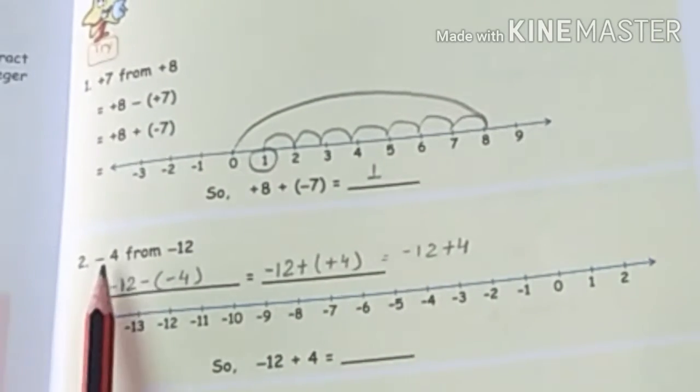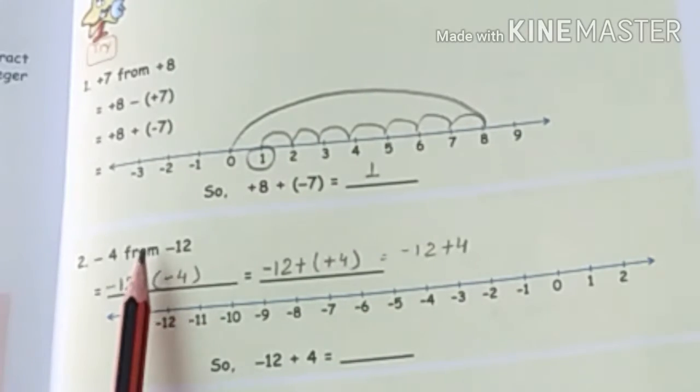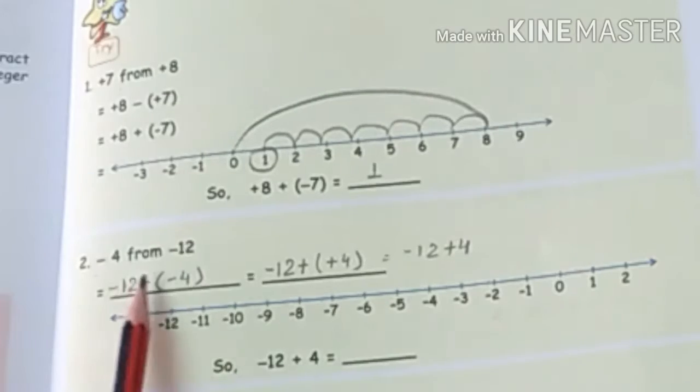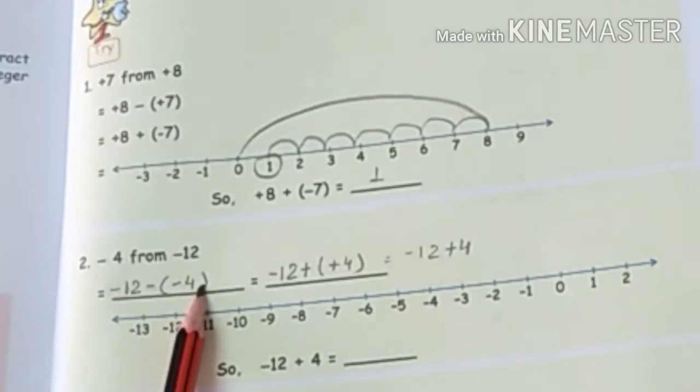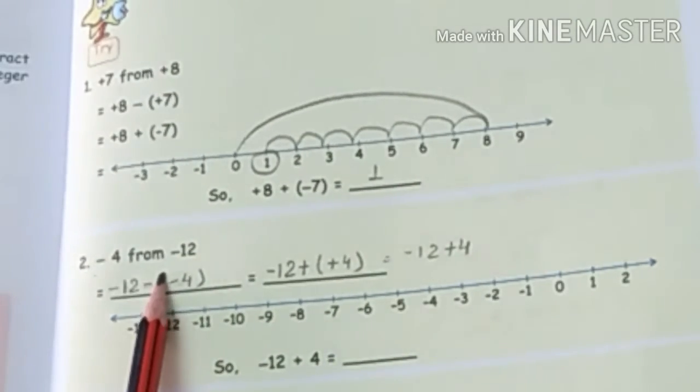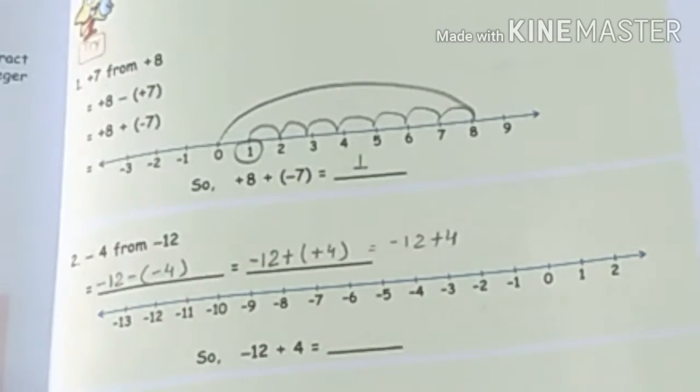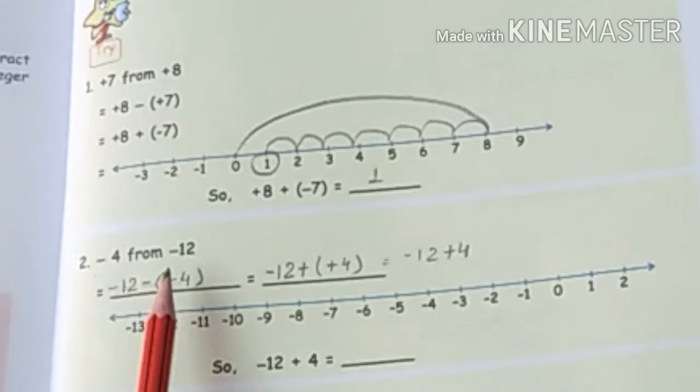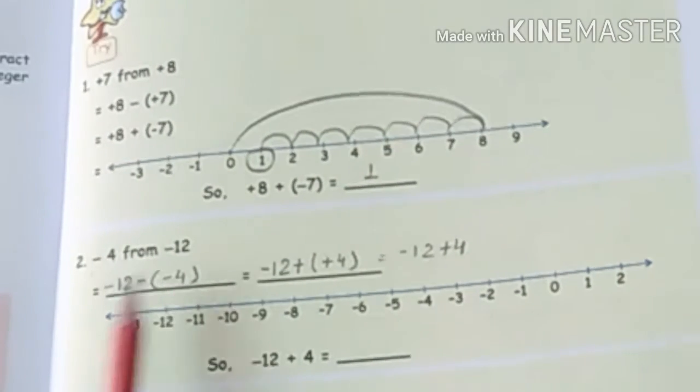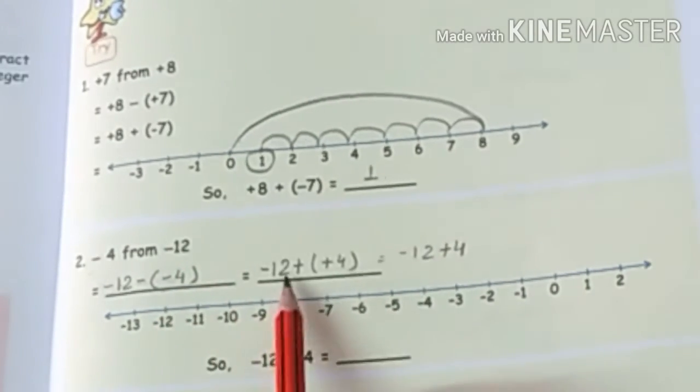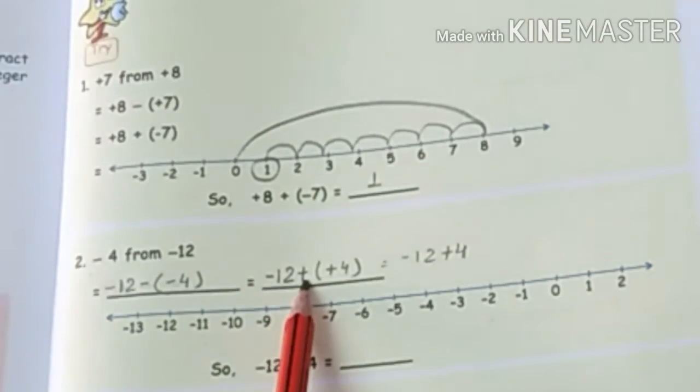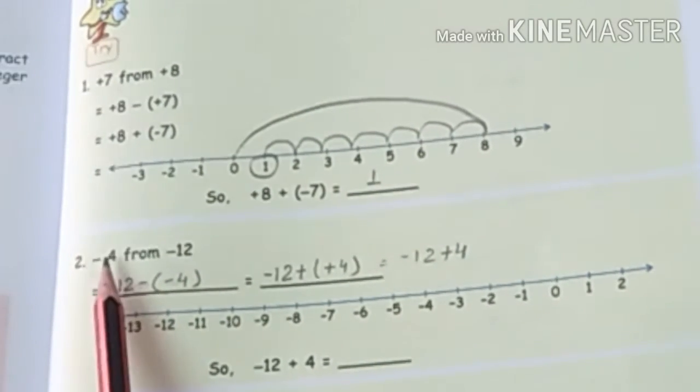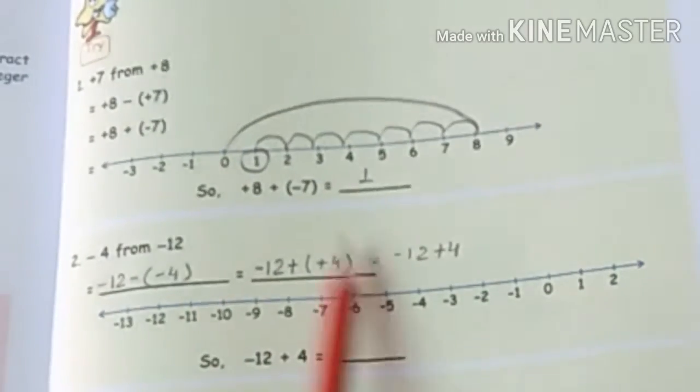Question number 2: minus 4 from minus 12. So, minus 12 minus minus 4. We have to write the second number in the bracket. As I told you, when we subtract one integer from another integer, we have to add the opposite of the first integer. So in minus 12, we have added the opposite of the first integer. The first integer was minus 4, so the opposite integer is plus 4.